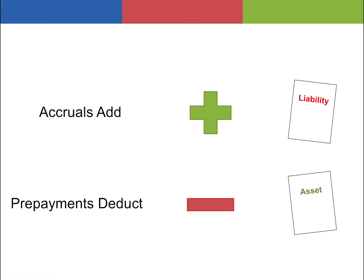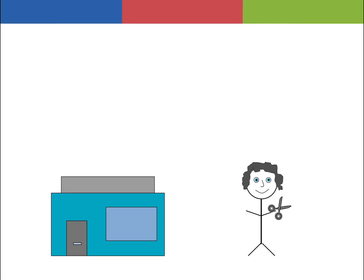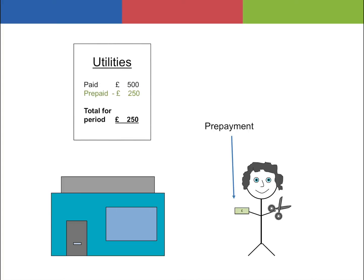Let's now have a look at some examples to demonstrate accruals and prepayments. John, a hairdresser, paid 2 months of his business's utility bills worth £500, whereas he only had to pay 1 month. By John paying an extra month of utility bills than required, this can be identified as a prepayment, because the expense — the utility bills — have been made in advance of the trading period that it relates to. As a result, in John's accounts the prepayment of 1 month's utility bills is removed or deducted from the expenses section in the profit and loss account and is instead placed as a current asset in the balance sheet.